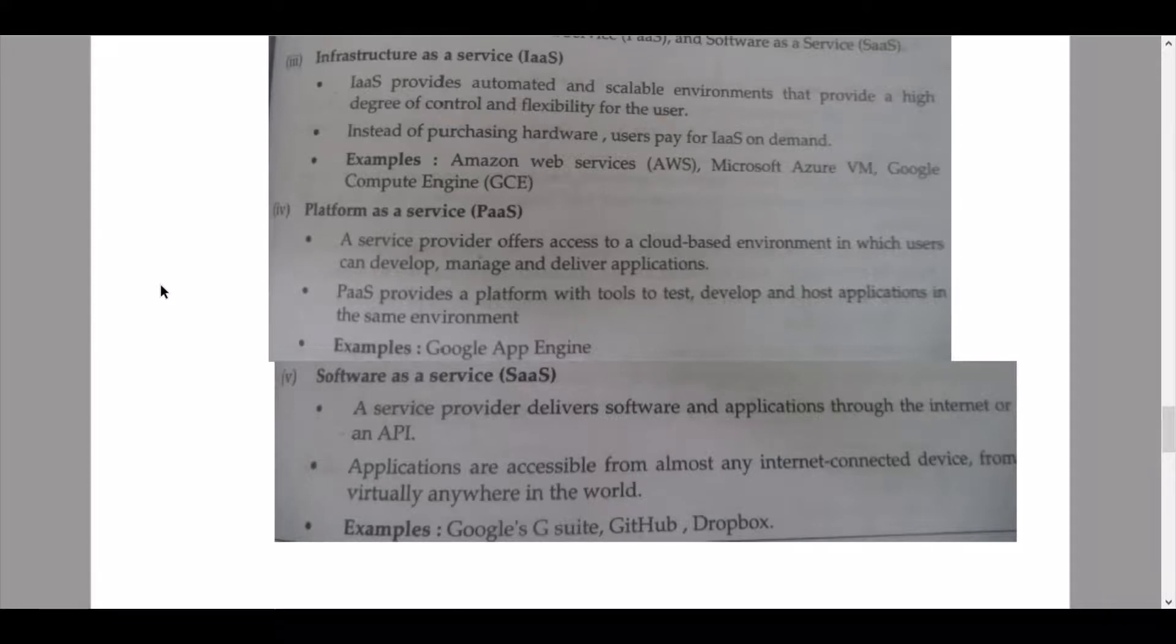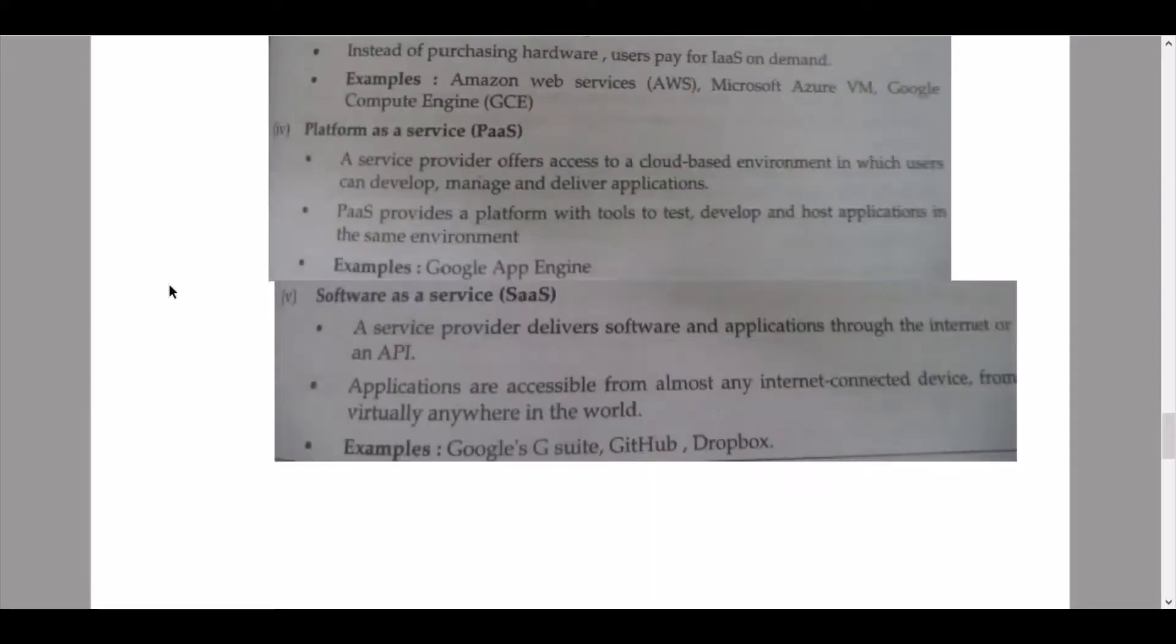Then we continue to explanation of Software as a Service, that is SaaS. A service provider delivers software and applications through the internet or an API. Applications are accessible from almost any internet-connected device from virtually anywhere in the world. The examples here are Google's G Suite, GitHub, and Dropbox applications.